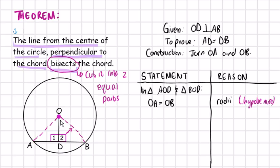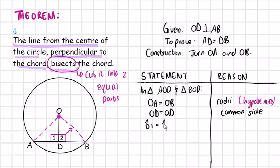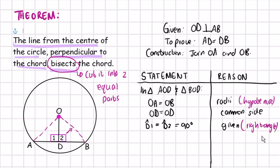In these two triangles, OD is equal to OD because both triangles share this side, so OD equals OD and the reason is common side. Lastly, angle D1 and angle D2 are both 90 degree angles, so angle D1 equals angle D2 equals 90 degrees, and the reason for this is given. So we have a given right angle in both triangles.